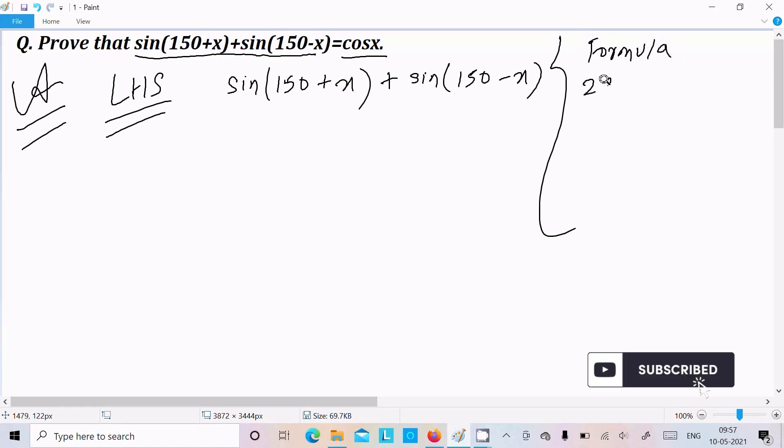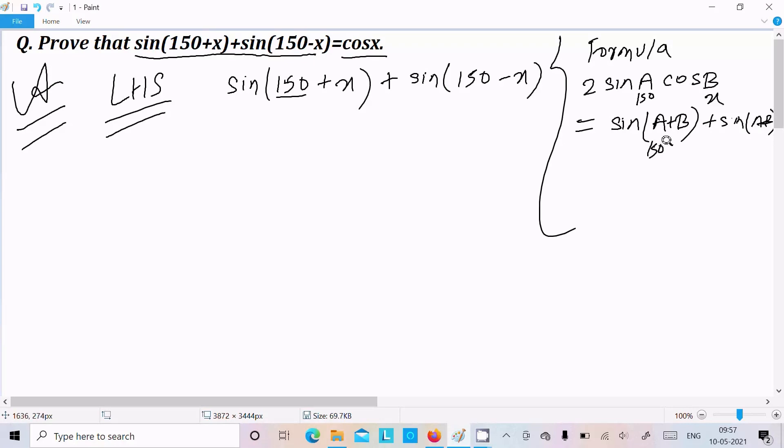You know 2sinA*cosB = sin(A+B) + sin(A-B). So suppose 150 is the A and x is B. So here 150+x, 150-x, so in between plus and sin is there: sin(150+x) + sin(150-x).